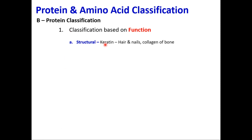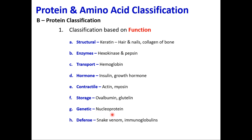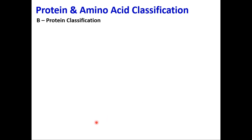Proteins can be hormonal in nature — insulin, growth hormone. Contractile proteins — actin, myosin. Storage proteins — ovalbumin, glutelin. Genetic proteins — nuclear proteins. Defense proteins — immunoglobulins. In a previous exam MCQ, the question was: 'nuclear protein is ___ in nature' — the answer is genetic. Similarly, immunoglobulins are defensive proteins. These are the functional types of proteins.